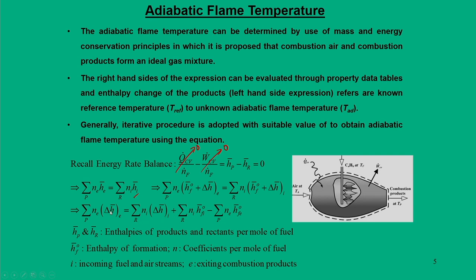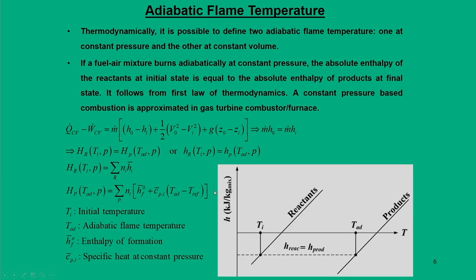If the mixture is treated as an ideal gas, the enthalpy of the mixture can be represented through the temperature change and specific heat, evaluated at a certain temperature. There are two ways to evaluate adiabatic flame temperature: the reaction can take place at constant pressure or at constant volume — analogous to constant-pressure combustion in a diesel engine versus constant-volume combustion. We will model the adiabatic flame temperature for both situations.